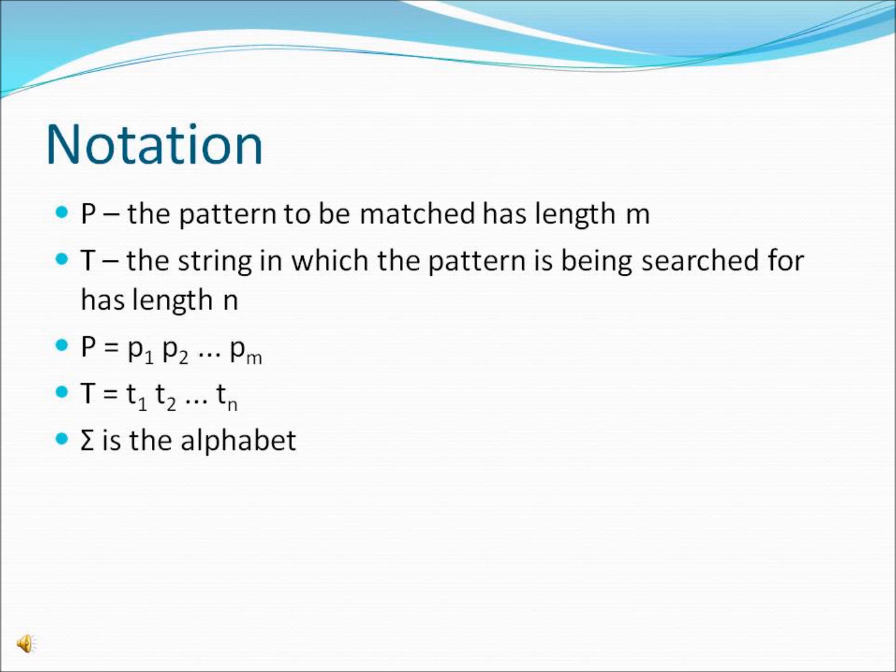First we need to go through a quick bit of notation for string matching problems. P will be the pattern we are trying to find and will always have length M. T will have length N and will be the string in which the pattern is being searched for. The first character of both P and T is numbered 1, and the last character of each is numbered M and N respectively.